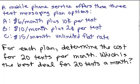Plan A: you pay $6 a month plus 10 cents per text. Plan B: $10 a month plus 2 cents per text. And Plan C: $15 a month, unlimited flat rate.